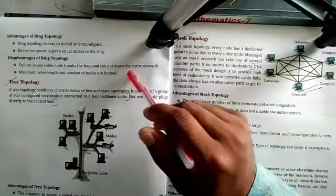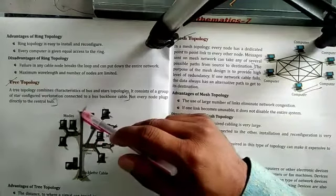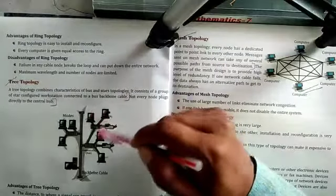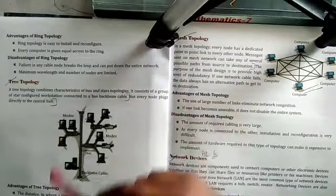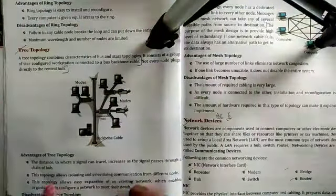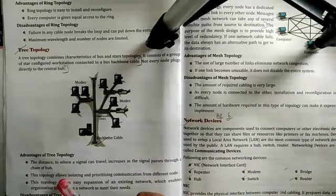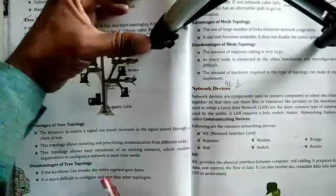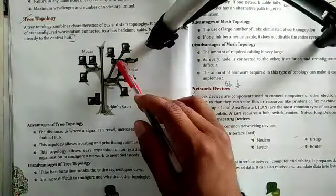The next topology is tree topology. Tree topology is a combination of bus and star topology — there is a backbone cable and one server, and this server connects all the nodes. An advantage is that the distance a signal can travel increases as the signal passes through a chain or hub, and it allows isolating and prioritizing communication from different nodes. A disadvantage is that if the backbone line breaks, all systems fail, and if the centralized server fails, connected devices stop working.